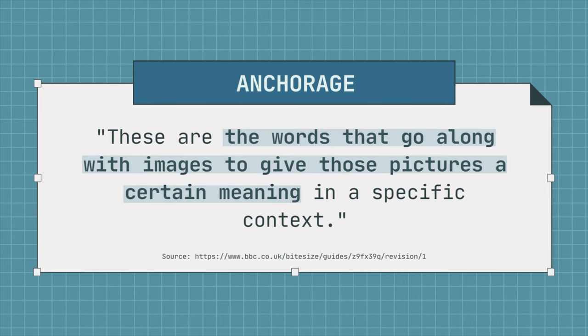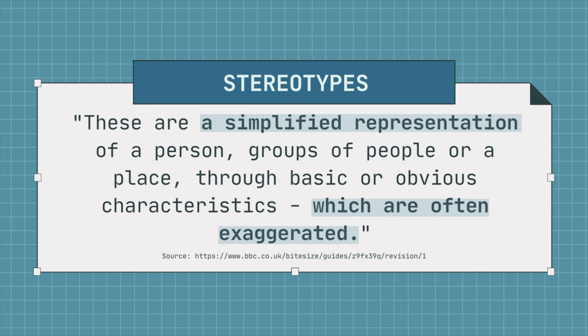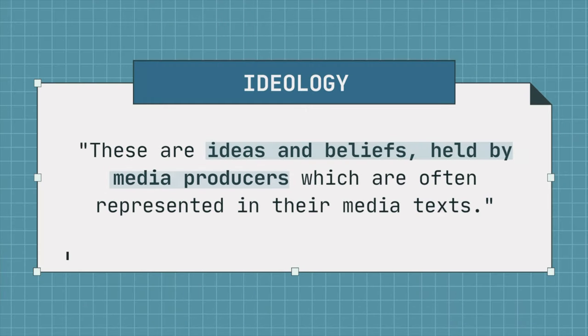Anchorage: these are words that go along with images to give specific meaning or context. Some examples are captions and headlines in news, or taglines in a movie poster or in an advertisement. Stereotypes: these are simplified representations of a person, groups of people, or a place. They can be used to describe something quickly, relying on existing audience recognition. Stereotypes can be dangerous, as audiences over time can create generalizations about people or places. Ideology: these are ideals and beliefs held by media producers, which are often represented in their media messages. Everyone has bias, and everyone's own lived experiences inform the media messages they create.